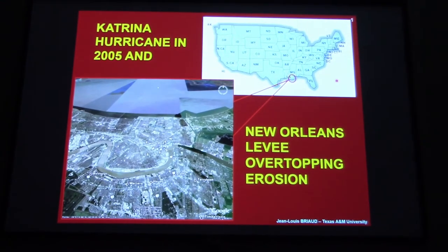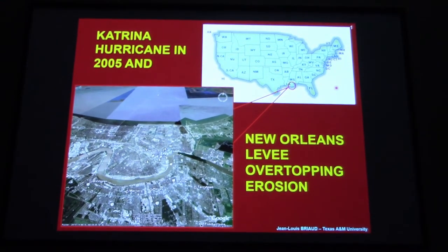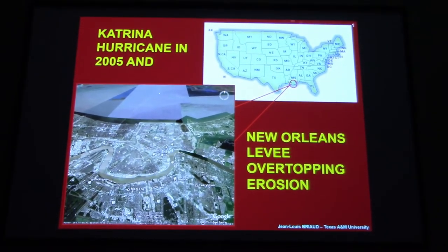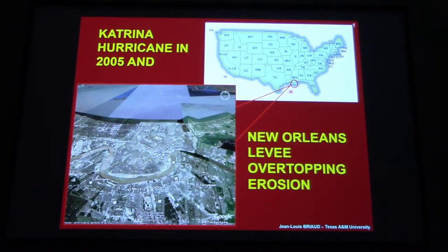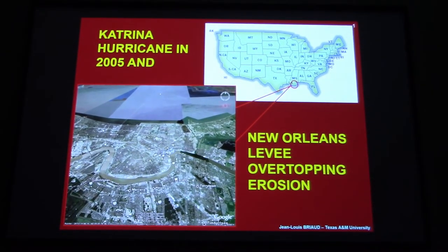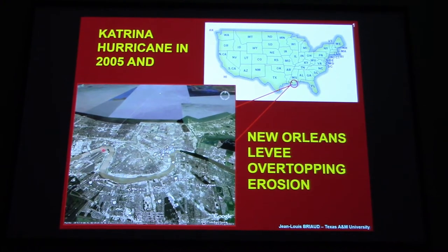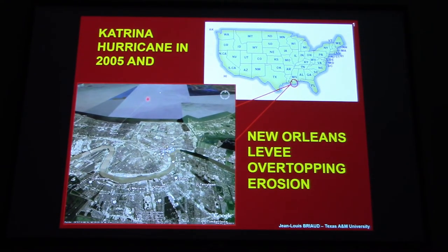So Katrina - we're going to New Orleans. You see New Orleans right here, the Mississippi River, and then Lake Pontchartrain here.